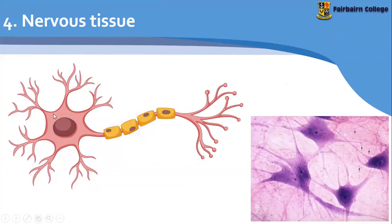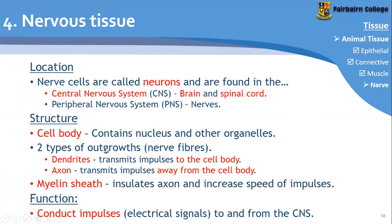So here we have the cell body, and then we have the parts that come off of it. This is the axon — the longer area is called the axon. And this is called the dendrites. The dendrites take impulses towards the cell body, whereas the axon is going to transmit impulses away from the cell body.